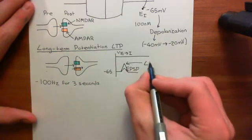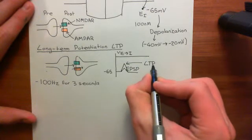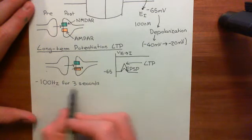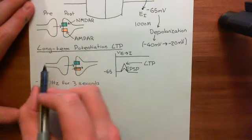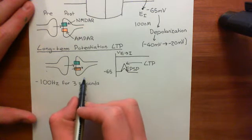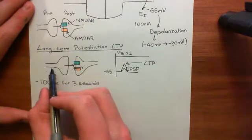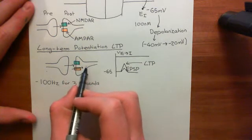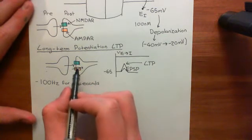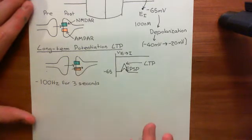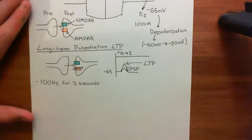This is the phenomenon of long-term potentiation: if you stimulate this neuron like mad at some point, then after that the synapse is strengthened. The ability of the presynaptic neuron to trigger an excitatory postsynaptic potential in the postsynaptic neuron increases. That is the phenomenon of long-term potentiation. What I now want to discuss is how the NMDA receptors underlie this.